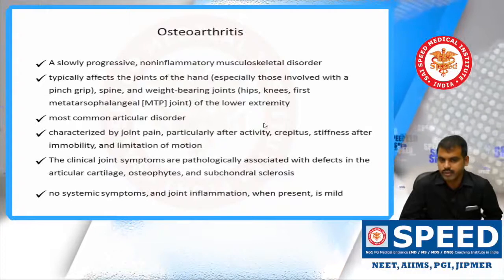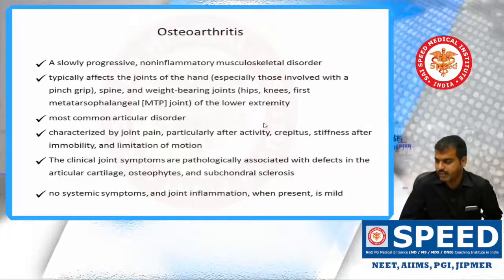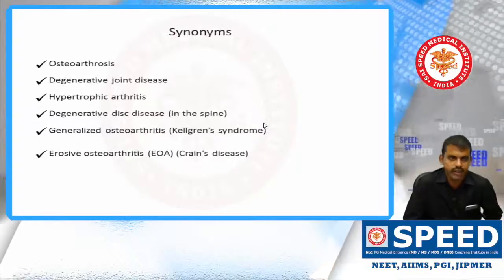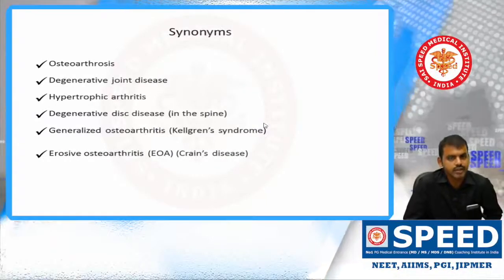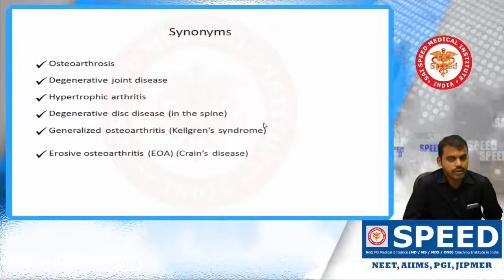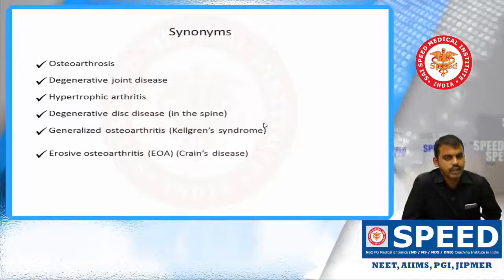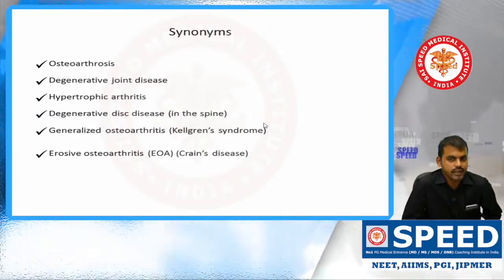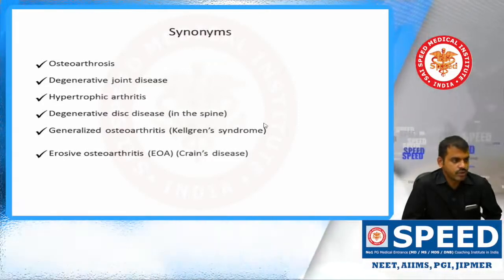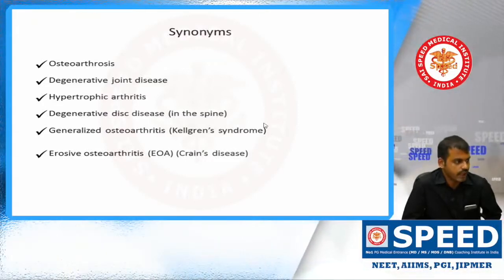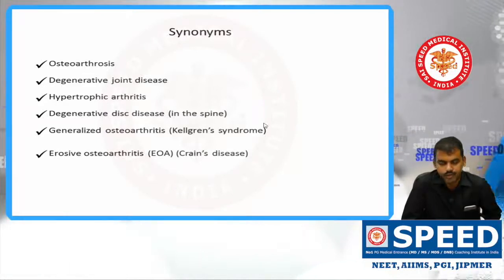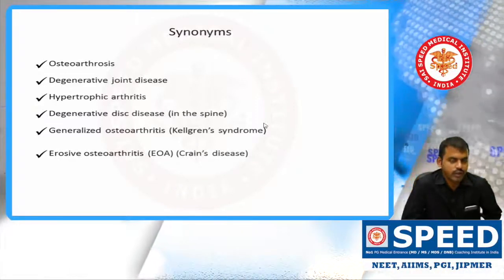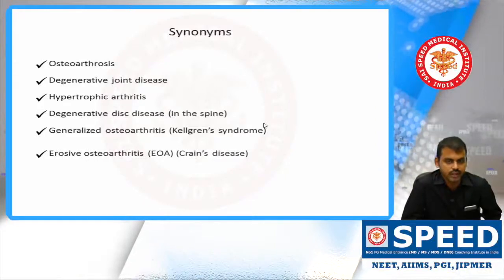There are no systemic symptoms and joint inflammation is very mild. Other names for OA include osteoarthrosis, degenerative joint disease, hypertrophic arthritis, and degenerative disease of the spine. Generalized OA is called Kellgren syndrome, which means involvement of more than four joints including the spine, DIP, first MTP, and first MCP.